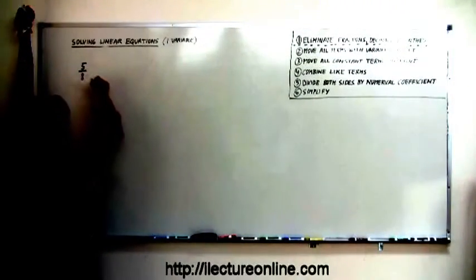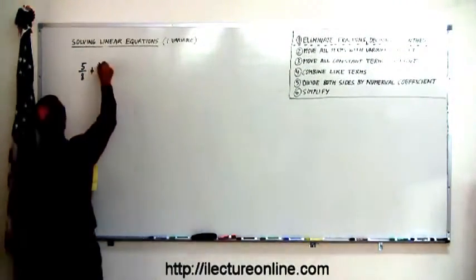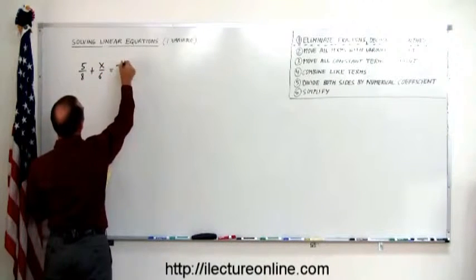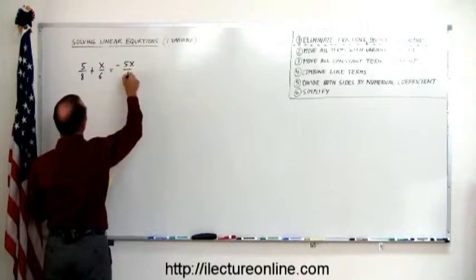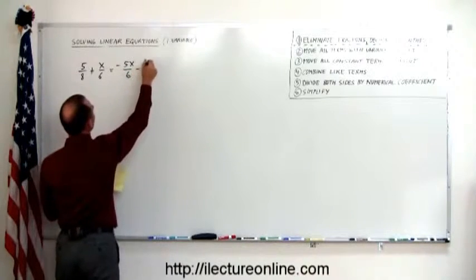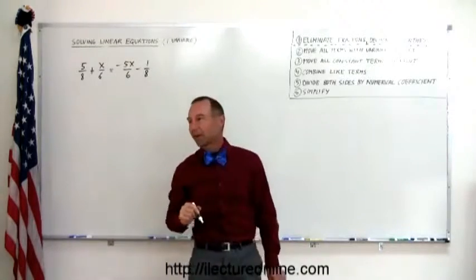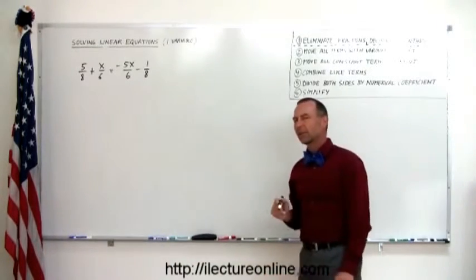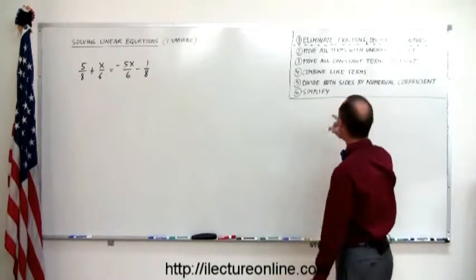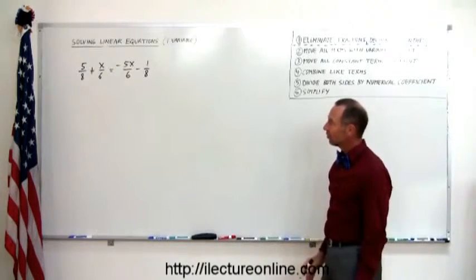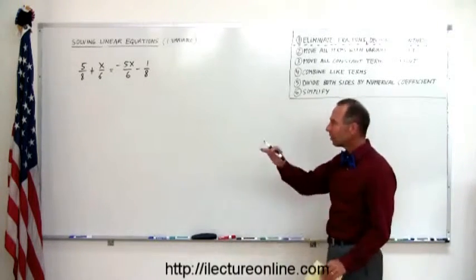5 divided by 8 plus x over 6 equals minus 5x over 6 minus 1/8. Okay, we don't have parentheses but we certainly have fractions. How do you deal with it now? Well, it says eliminate, eliminate means get rid of them. We need to get rid of those fractions so we have an equation we're familiar with, just a linear equation: no fractions, no decimals, no parentheses.